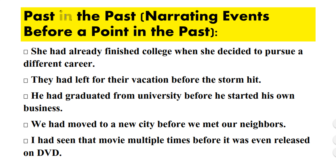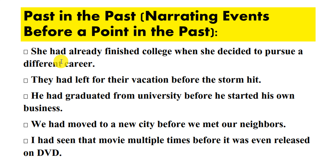The past perfect tense is used for expressing past in the past, meaning narrating events before a point in the past. For example: she had already finished college when she decided to pursue a different career; they had left for their vacation before the storm hit; he had graduated from university before he started his own business.